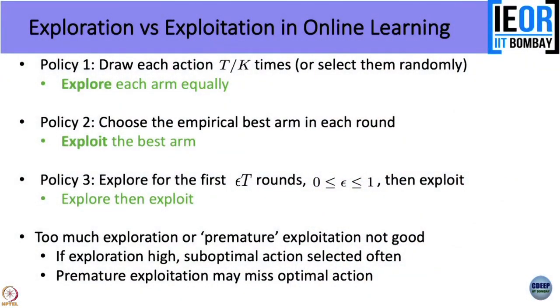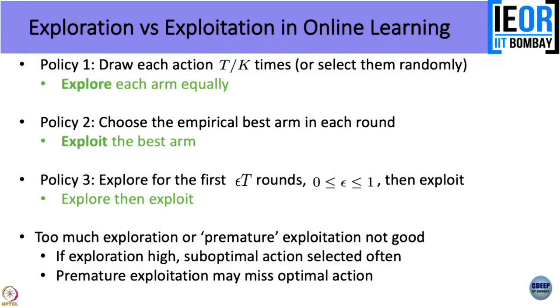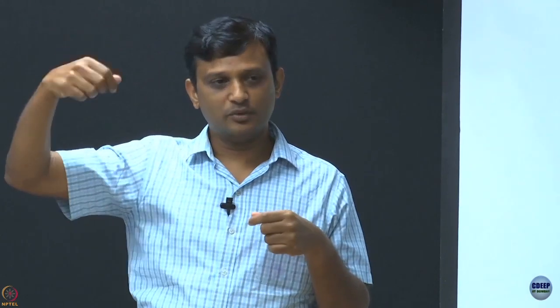If epsilon is too small, you are exploring too little and jumping to exploitation prematurely — not good. If epsilon is 1, you explore too much and exploit too little — also not good. You have to hit the balance. If exploration is too high, at the end of exploration you might start playing the good arm, but for many rounds you played bad actions. If you start exploiting prematurely, you have not collected enough information and may exploit a bad arm.